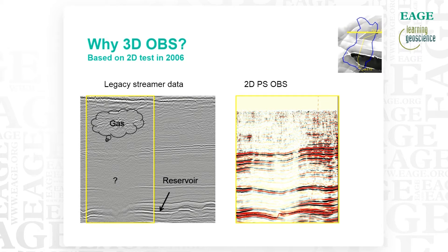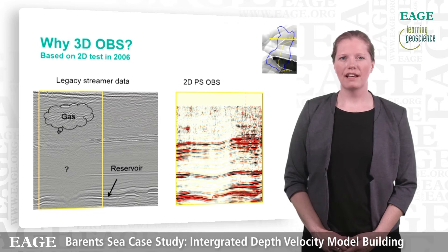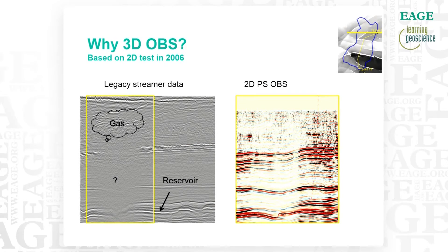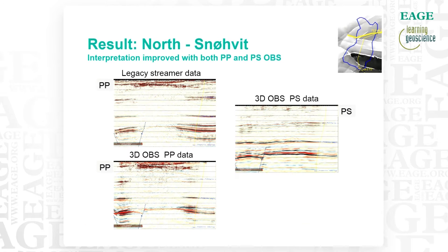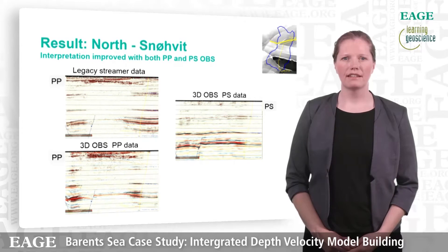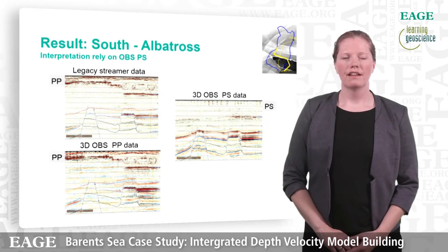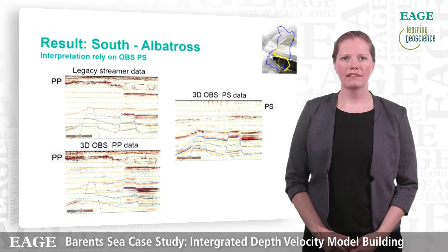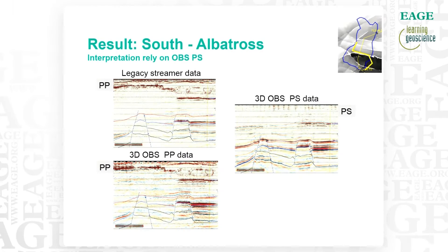On the left we see the legacy streamer data and the bright energy in the shallow marks the gas outline. And on the right hand side we can see that the PP quality is sufficient. In the north, the PP data is improved compared to the legacy streamer data, but the PS data is superior. In the south the OBS PP data did not provide an uplift compared to the legacy streamer data, but the PS data has clear structures below the gas.